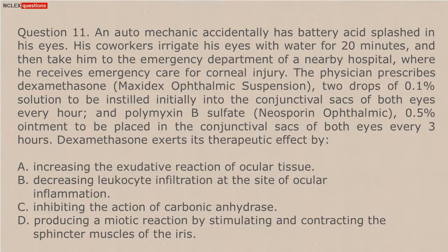Question 11. An auto mechanic accidentally had battery acid splashed in his eyes. His co-workers irrigated his eyes with water for 20 minutes and then took him to the emergency department, where he received emergency care for corneal injury. The physician prescribes dexamethasone (Maxidex) ophthalmic suspension, 2 drops of 0.1% solution instilled into the conjunctival sacs of both eyes every hour, and polymyxin B-sulfate (Neosporin ophthalmic) 0.5% ointment every three hours. Dexamethasone exerts its therapeutic effect by: A. Increasing the exudative reaction of ocular tissue. B. Decreasing leukocyte infiltration at the site of ocular inflammation. C. Inhibiting the action of carbonic anhydrase. D. Producing a miotic reaction by stimulating and contracting the sphincter muscles of the iris.